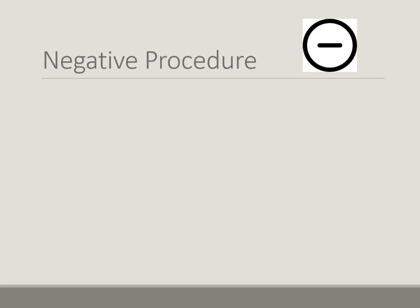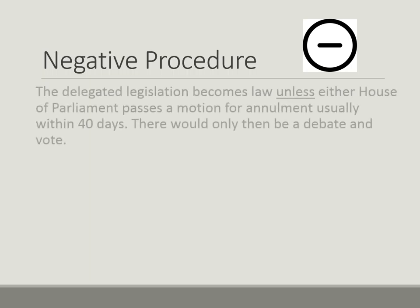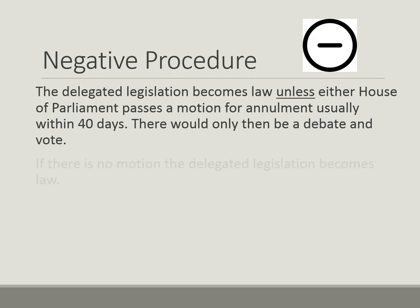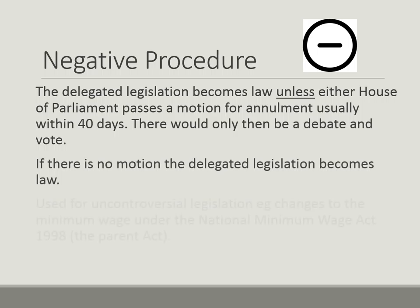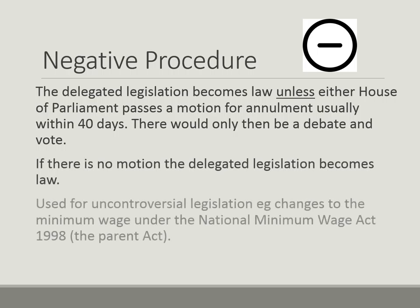The next control is the negative resolution procedure, meaning the delegated legislation will become law in 40 days unless an MP objects and forces a debate and a vote. As it is a rubber-stamping exercise, it is used for uncontroversial changes like the small annual increase in the minimum wage.